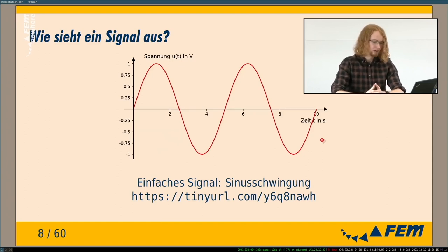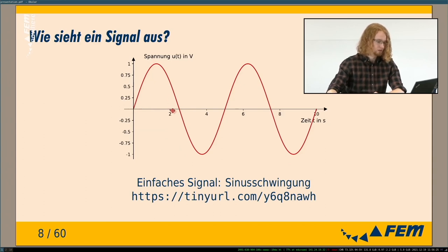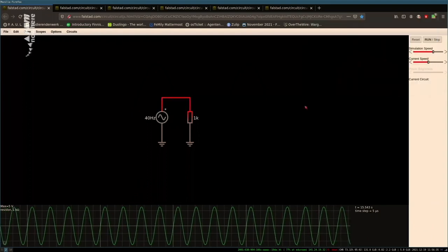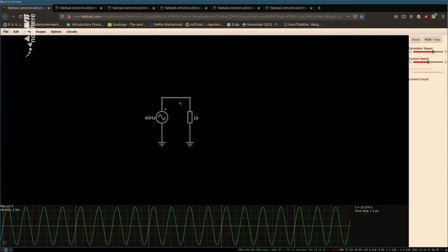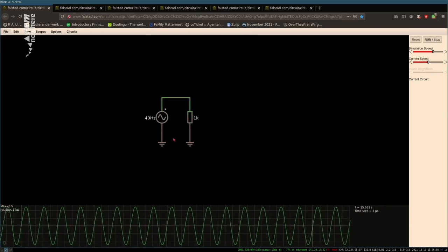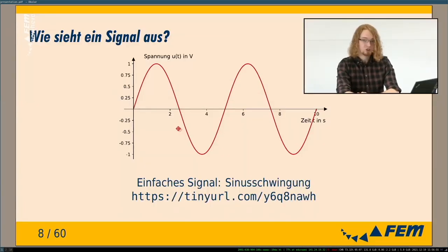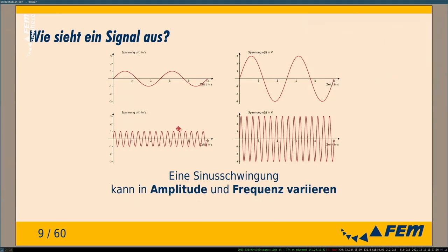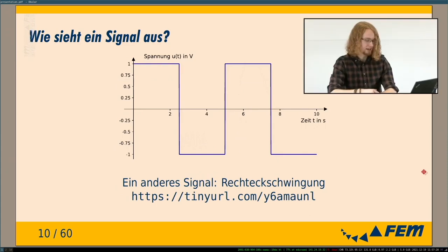A very easy signal is the sine wave. If you measure the voltage, it starts at zero, goes up to one, falls back to minus one, goes back up, and is periodic. I've prepared a simulation of this — you can see the voltage changing in color and in the diagram showing the value from a point to ground. Sine waves can have different frequencies or different amplitudes.